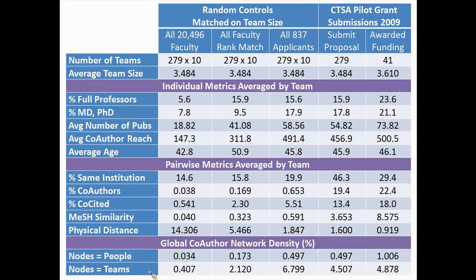You can use this information as coefficients in optimization functions to build recommendation engines — starting with the list of people who have the expertise, looking at different groups, combining these numbers, and figuring out which team to use. We did this actively at Harvard. We had a CTSA pilot grant with supplement money for a project in type 1 diabetes. Normally the same type 1 diabetes experts apply for funding all the time. So we used this tool to identify groups of two to four people who we thought could apply for this funding and do something very unique with it.